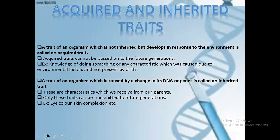Acquired and inherited traits. Traits of an organism which are not inherited but develop in response to the environment are called acquired traits. Acquired traits cannot be passed on to future generations. For example, knowledge of doing something, or any characteristic caused due to environmental factors and not present by birth — these characters will develop only because of environmental conditions.